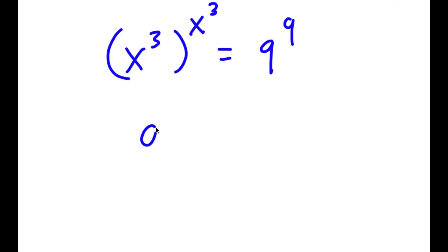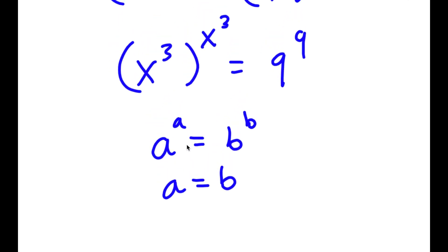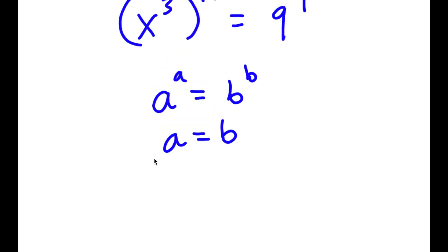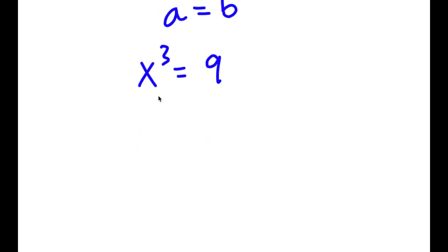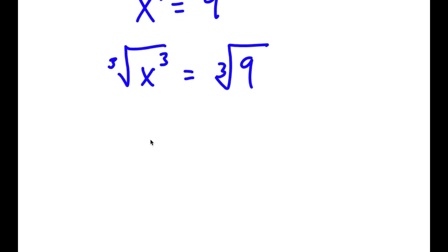So now I have x to the power of 3 to the power of x to the power of 3 is equal to 9 to the power of 9. And if I have something in the form a to the power of a is equal to b to the power of b, this means that a is equal to b. So in this case, x to the power of 3 is equal to 9. To solve this, I take the cube root on both sides, and the cube root of x to the power of 3 is x, so x is equal to the cube root of 9.